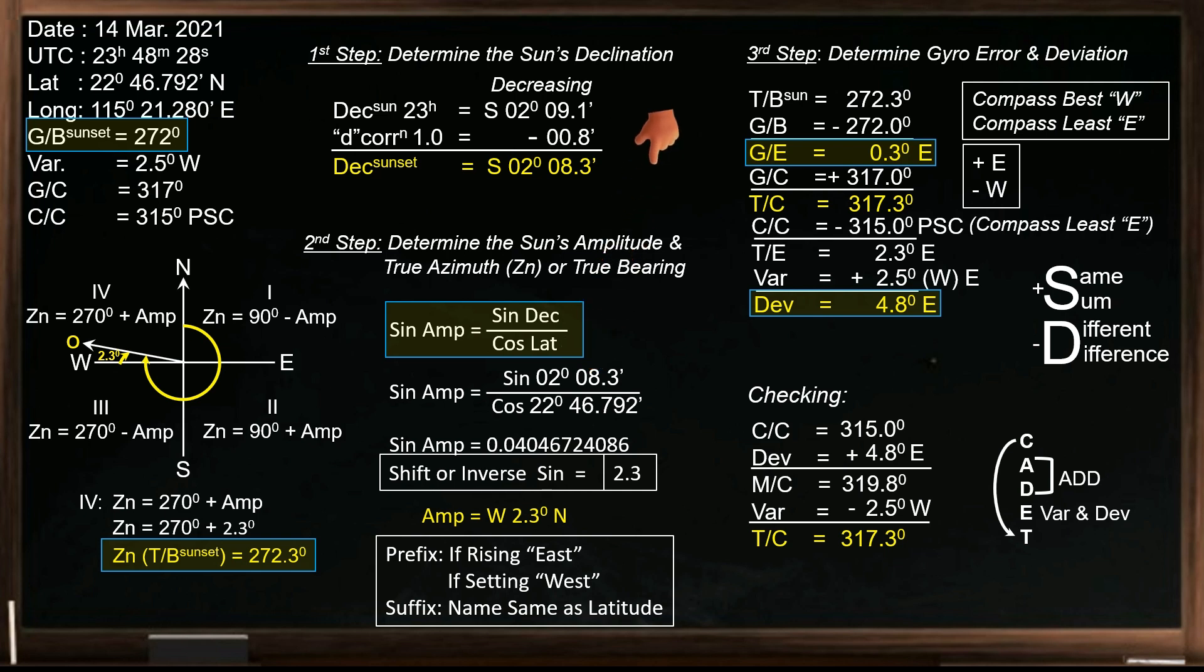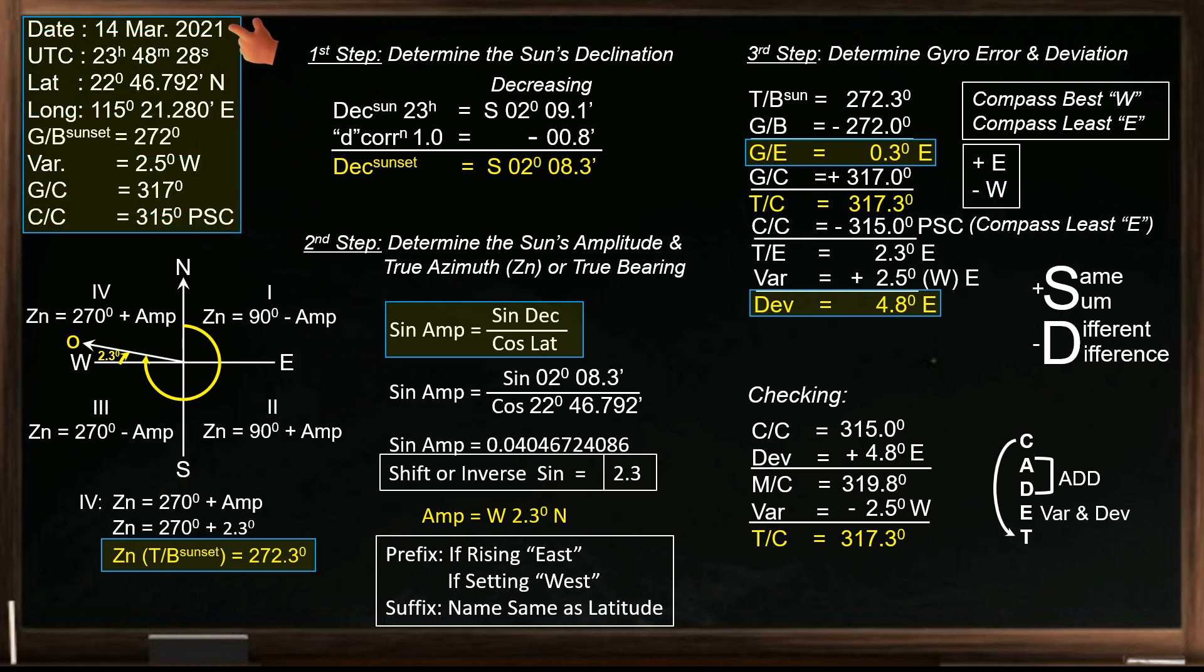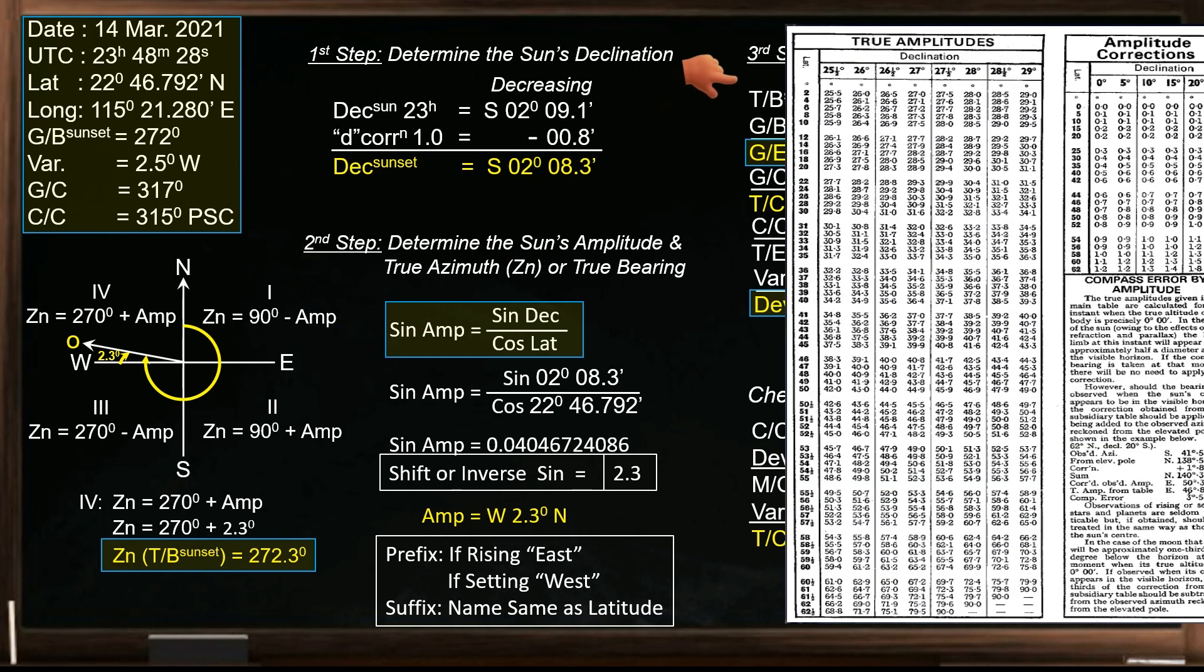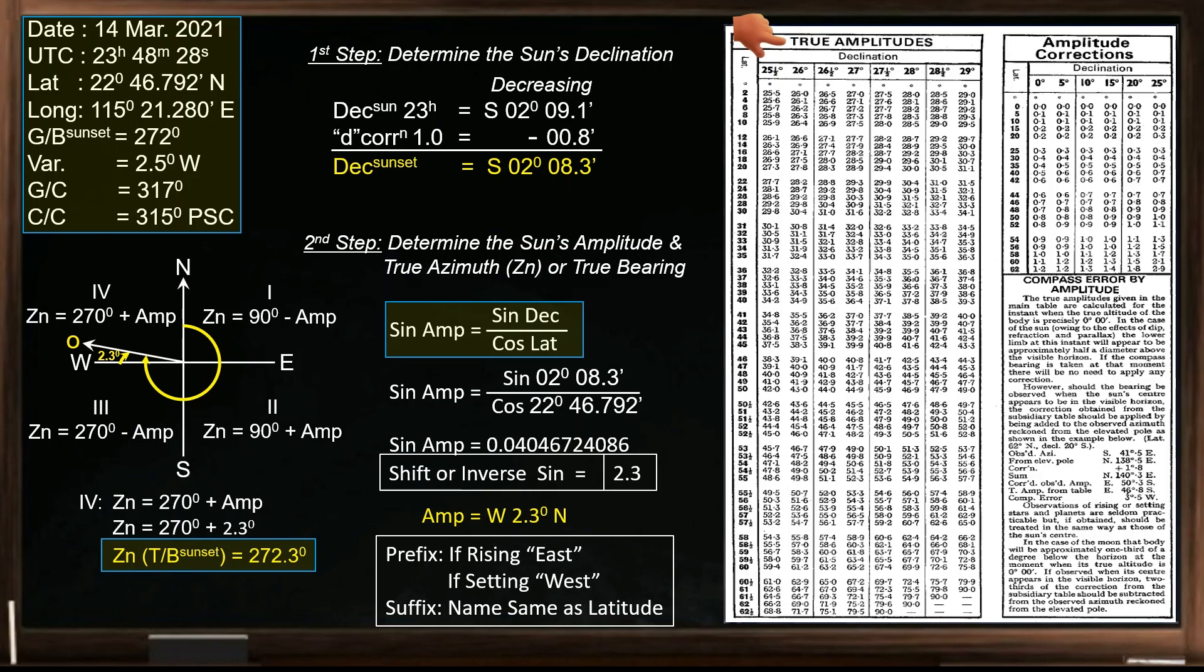This mathematical approach allowed us to calculate the sun's amplitude and assess compass accuracy. In this follow-up video, we'll revisit the same scenario but employ a different method.